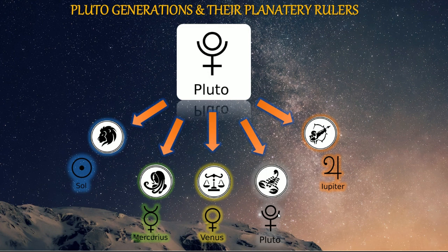To summarize the depositors: Leo is the Sun, Virgo is Mercury, Libra is Venus, Scorpio is Pluto, Sagittarius is Jupiter — all about truth, having faith, knowing what's true and what's not, being convinced, and the expansion of information.